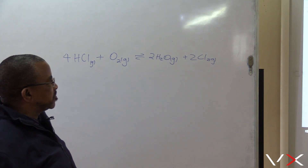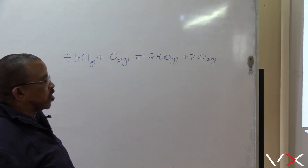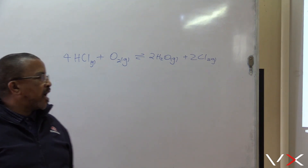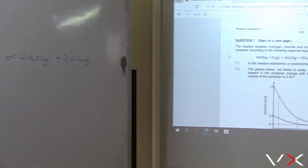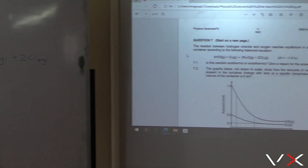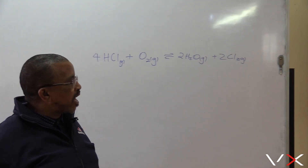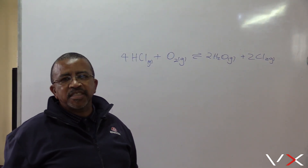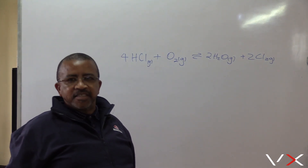The reaction between hydrogen chloride and oxygen reaches equilibrium in a closed container according to the following balanced equation. Delta H is minus 113 kilojoules. Is this reaction exothermic or endothermic? It is exothermic — give a reason for your answer. Because delta H is less than zero.